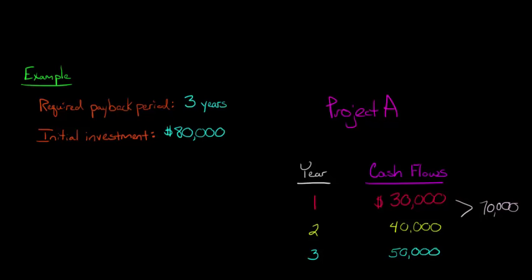The question is, how do we calculate how much? We are $10,000 short coming into year 3. I got that by taking the $80,000 upfront invested minus the $70,000 we received in the first two years.